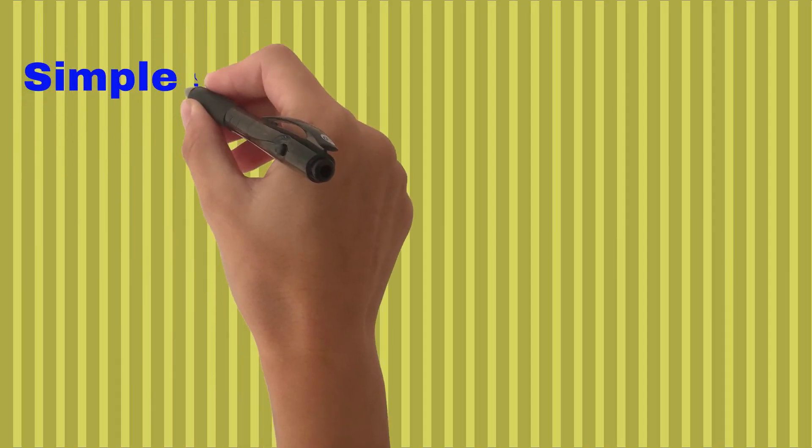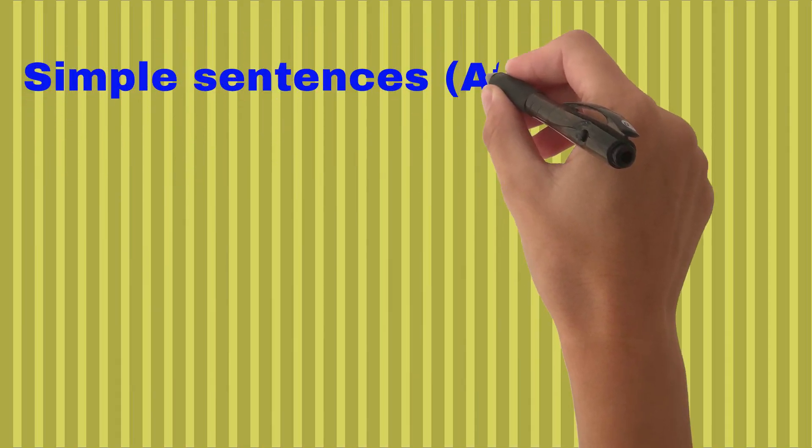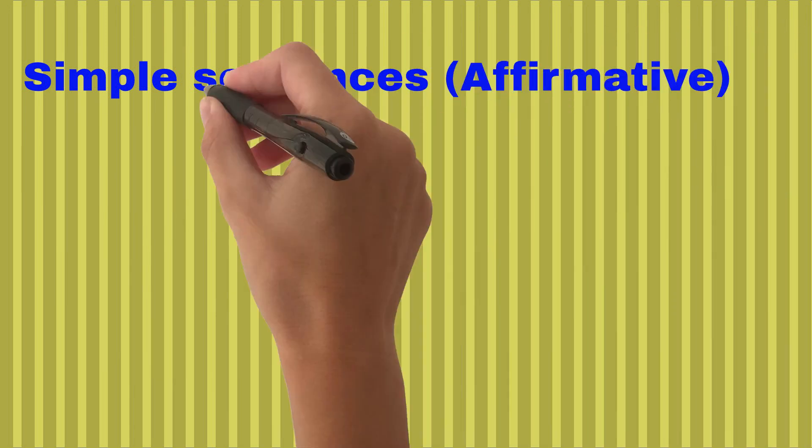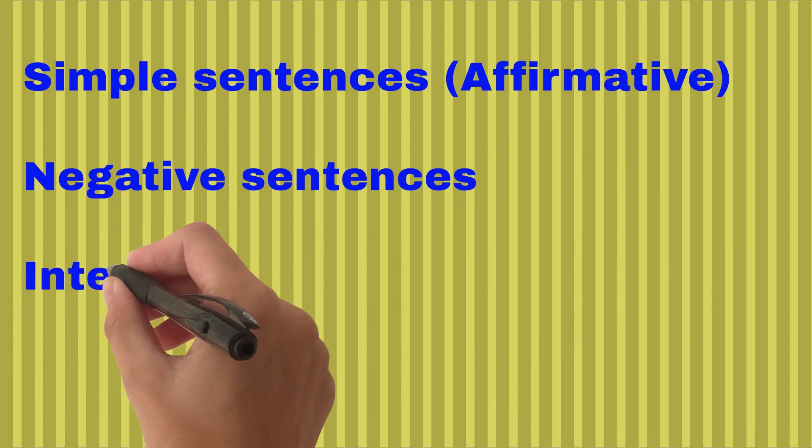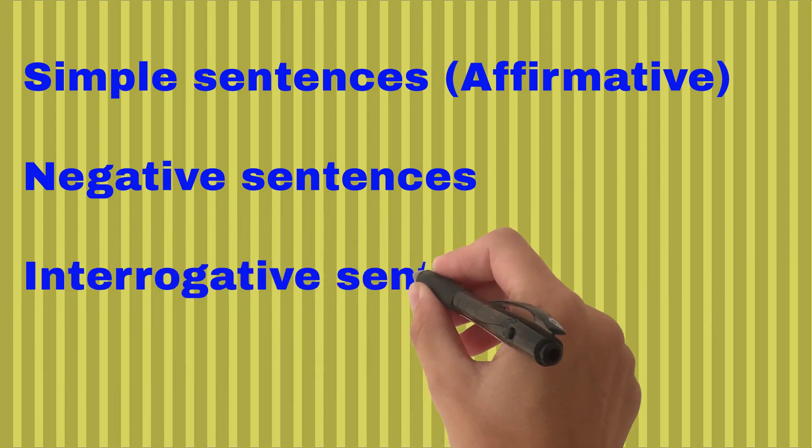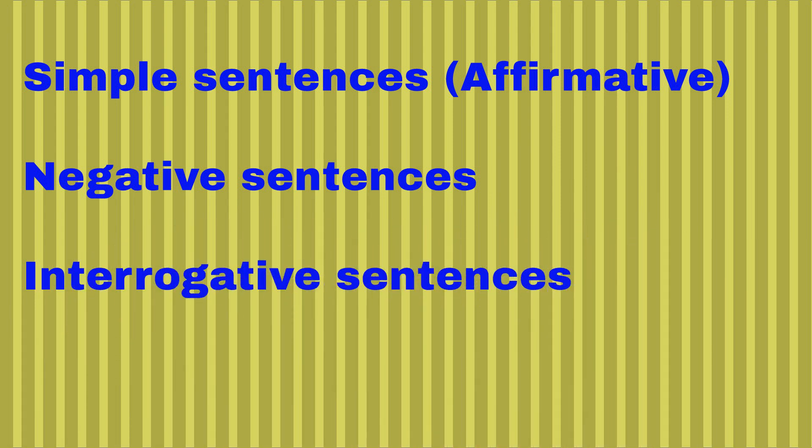As we have learned in the first part, that present indefinite tense has three types of sentences: affirmative, negative, and interrogative. In the first part, we have learned about the formation and structure of affirmative sentences with examples.